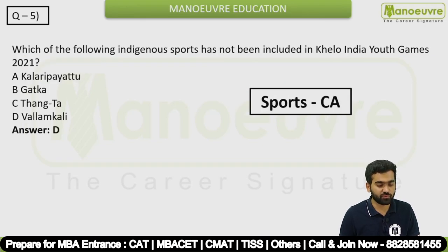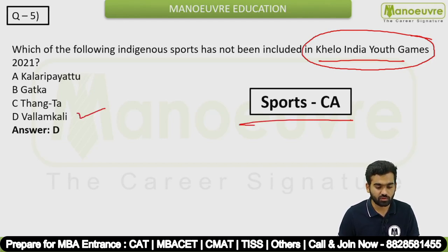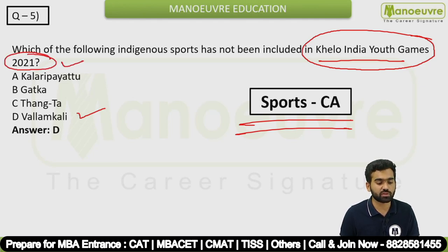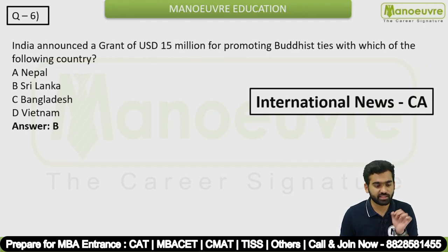Question 5: Which indigenous sport has NOT been included in Khelo India Youth Games? The answer is Vallam Kali. This is a sports-related current affairs question asked in 2021, specific to a particular year.